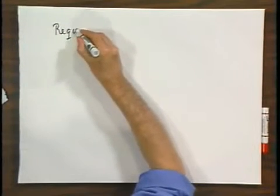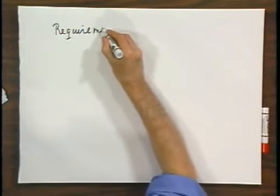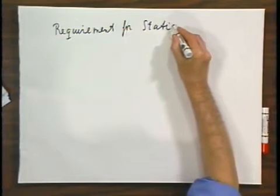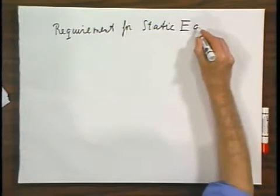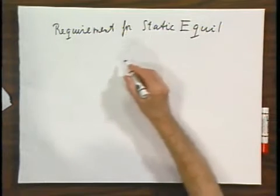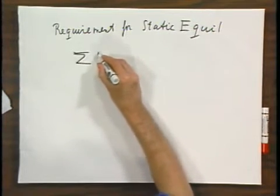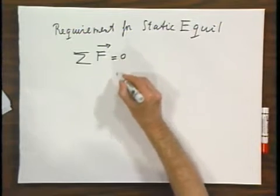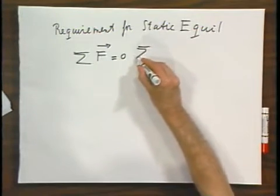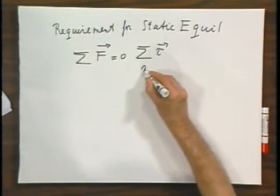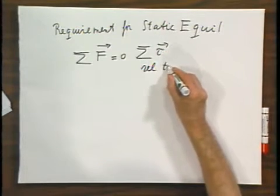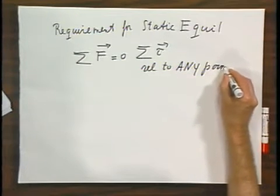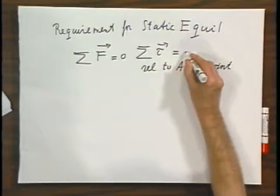The requirement for static equilibrium: the sum of all forces on that object be zero, and that the sum of all torques relative to any point that you choose also be zero.